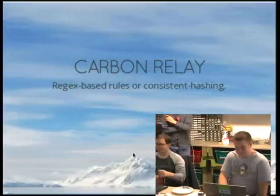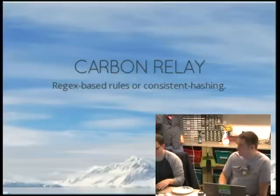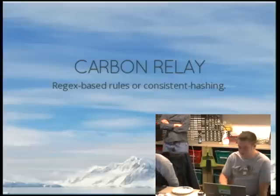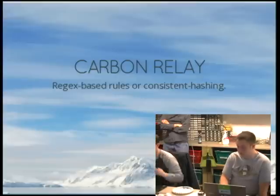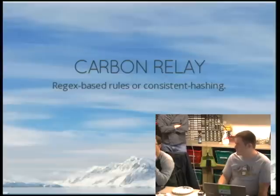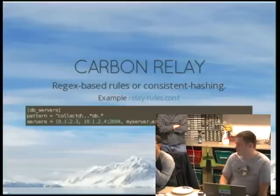Carbon Relay is what you use if you need to scale Graphite for more than one Carbon cache. The Carbon Relay lets you use regex-based rules or mathematically consistent hashing to essentially shard your metrics amongst different cache instances. Some metrics come in every two seconds and will murder your disks on your primary Graphite server, so you'd want to send those to a cache with all SSDs. Other metrics you won't be reporting on much, so it doesn't matter if they're on slow SATA disks.